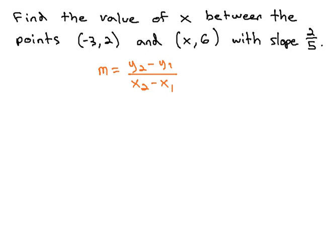Let's clearly label what each point is, and my suggestion as we do this is to make point 2 the point with the unknown value. Point 1 is the point where we know both numbers x and y.